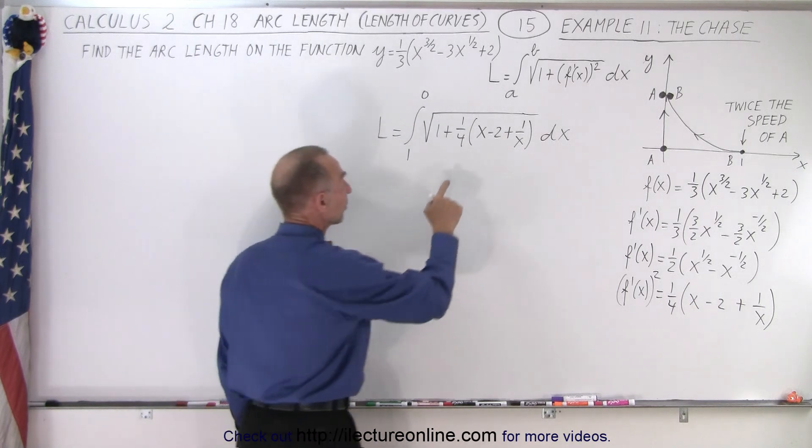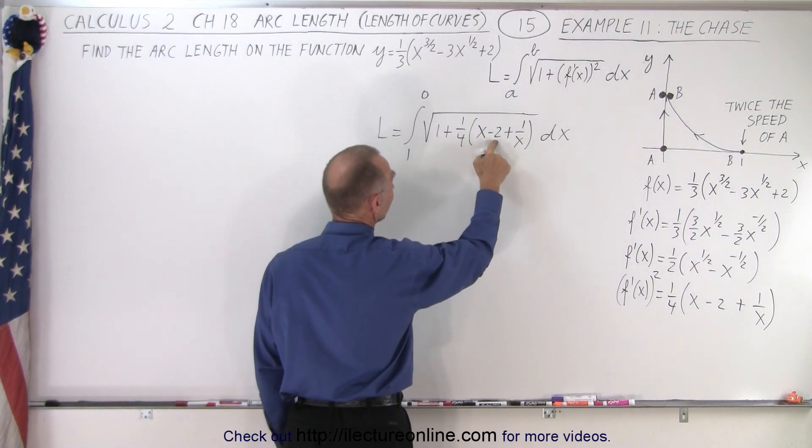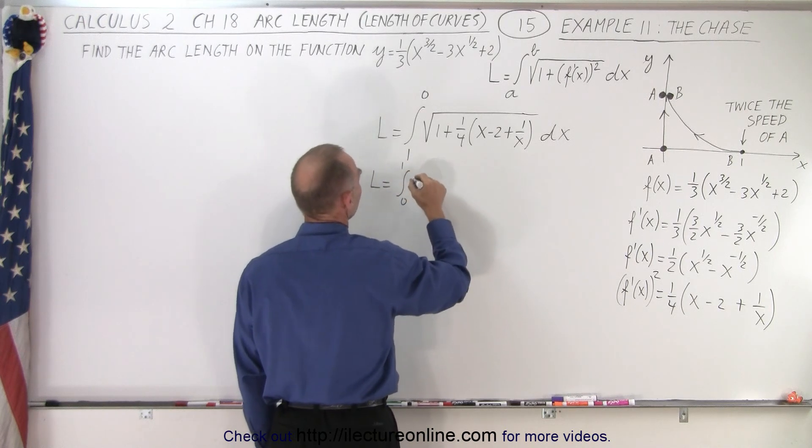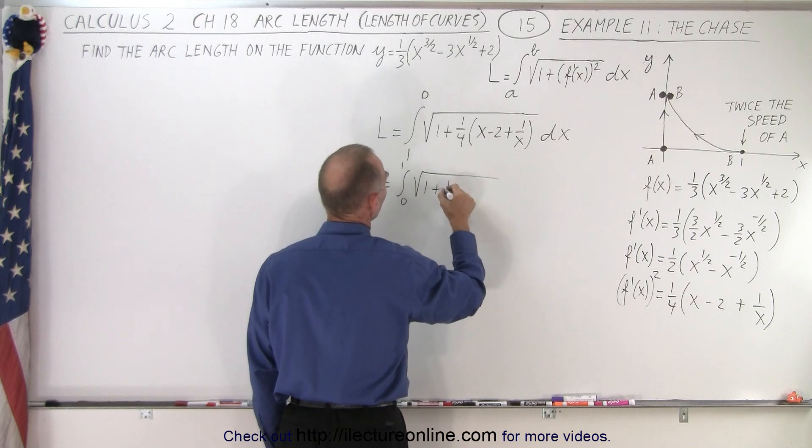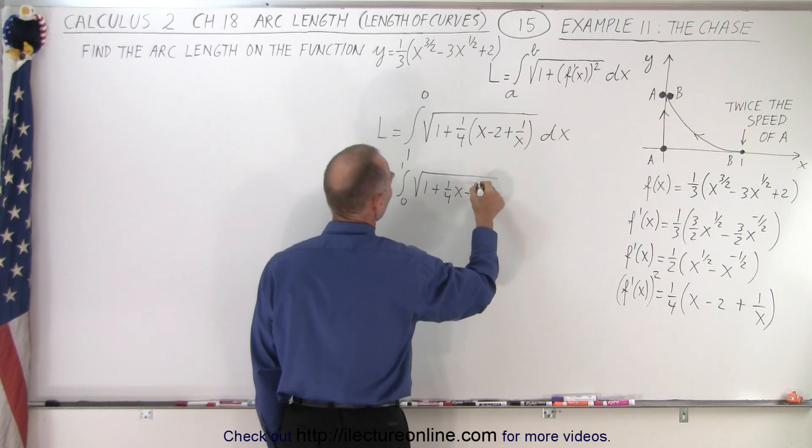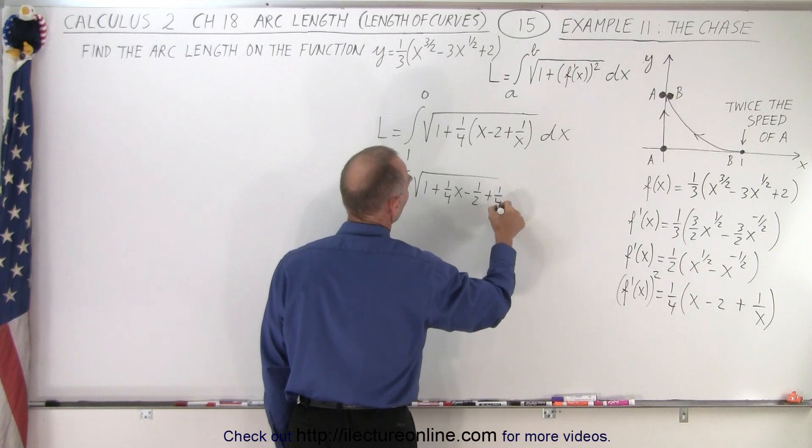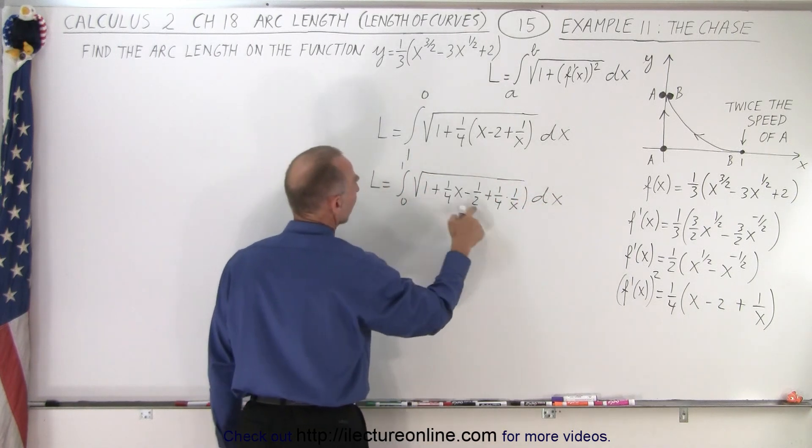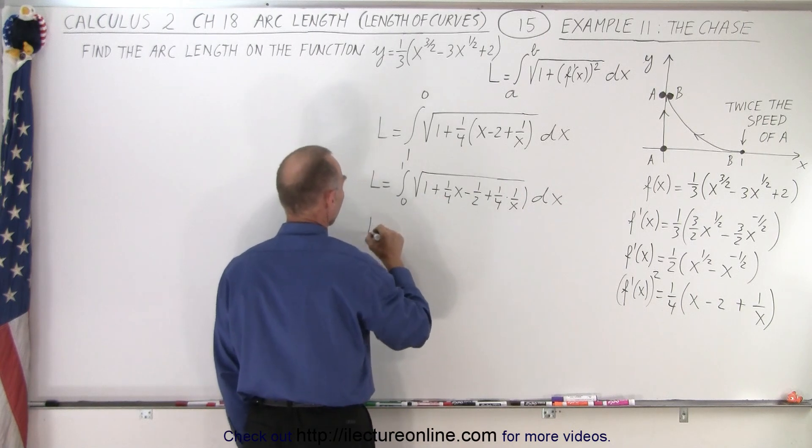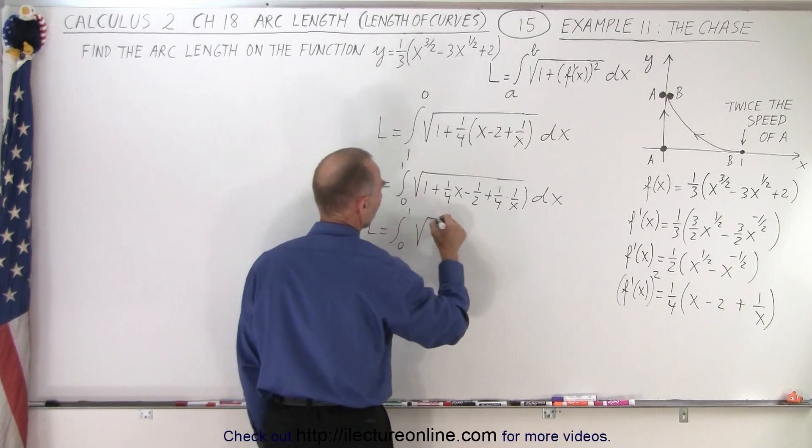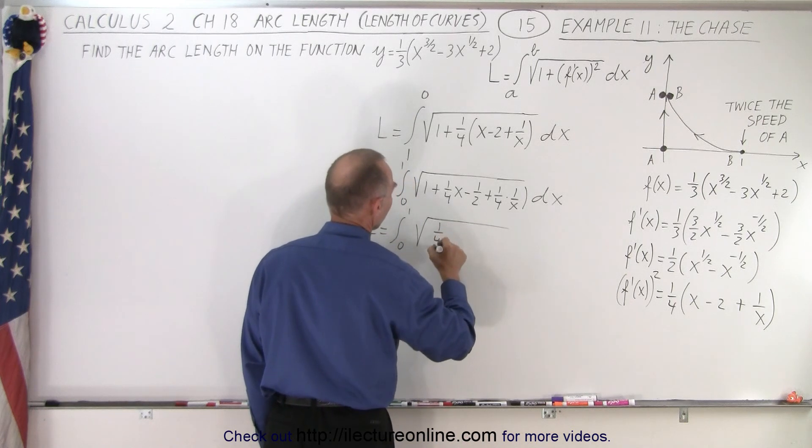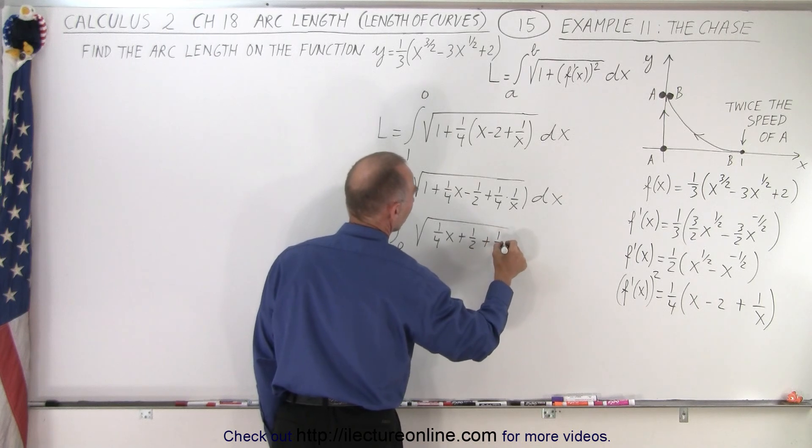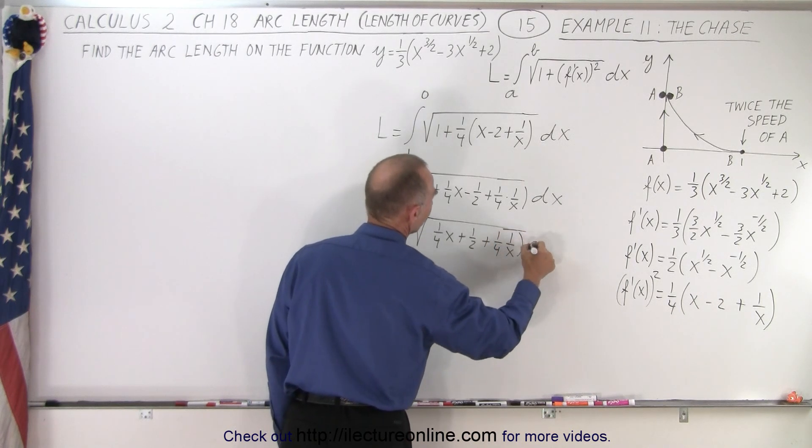All right, now you'll see that if I multiply this times this, I get a minus one-half there. So let's just do it. L equals the integral from zero to one times the square root of one plus one-quarter x minus one-half plus one-quarter times one over x dx. Then, of course, we can combine these two terms. So now we end up with L is equal to the integral from zero to one of the square root of one-quarter x plus one-half plus one-quarter times one over x times dx.